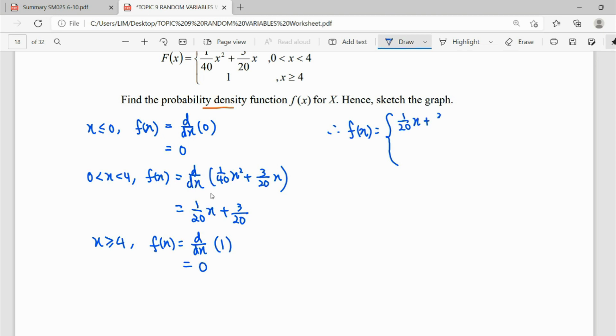This is 1 over 20 x plus 3 over 20 for interval 0 until 4. So we just follow the interval given by the question. Other than that, you can see the answer is 0.